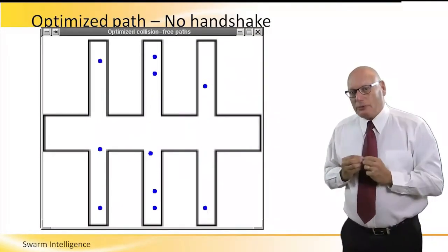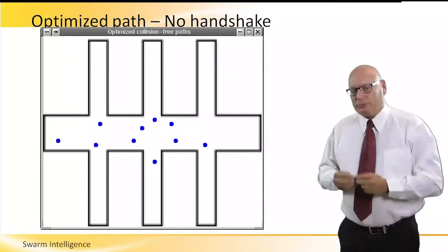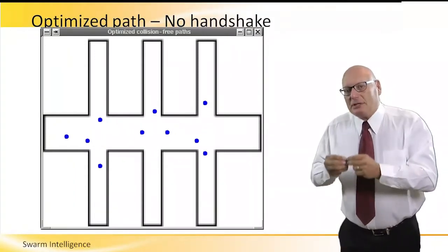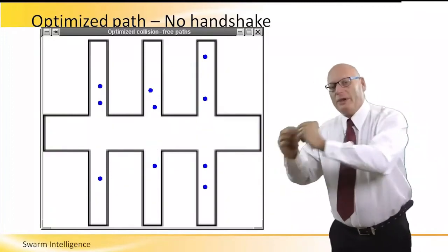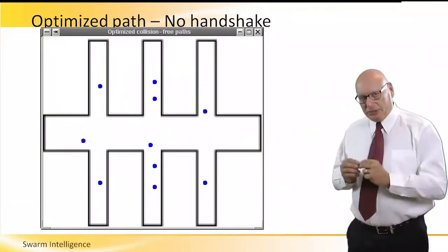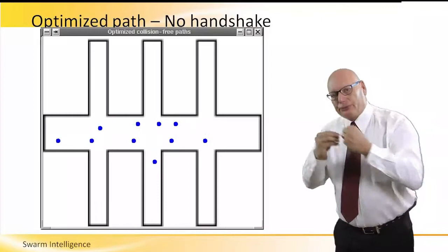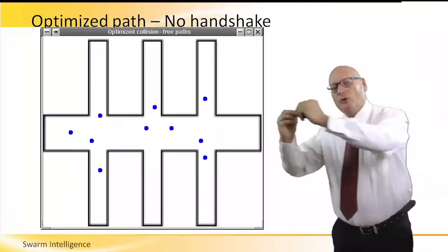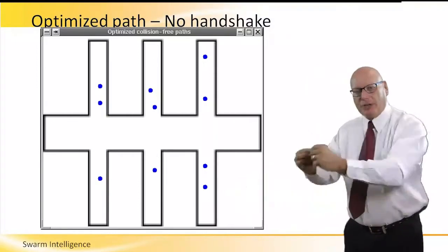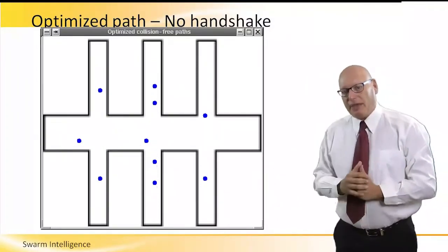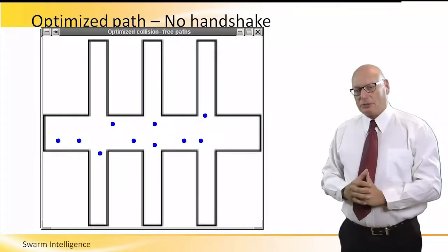Every single robot knows where the initial position should be. Every single robot needs to know where it wants to be in order to win the game. So the question is, how do I get from the initial position to my game position most effectively, most optimized path, without colliding with any other robots?